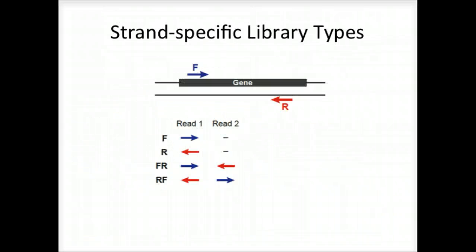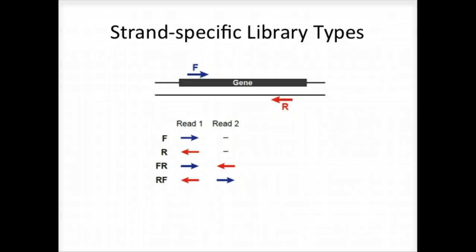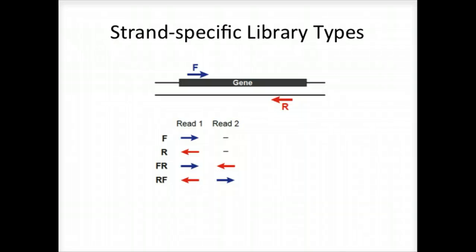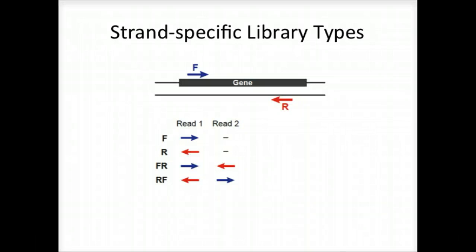Depending on the protocol used for generating strand-specific RNA-seq data, the reads should end up with a specific orientation with respect to the sense strand of your expressed transcript sequence. For example, paired-end sequencing generates two reads for each RNA-seq fragment. Read one could be sequenced in either the sense or anti-sense direction. Trinity needs to know which orientation it corresponds to so that it can reconstruct transcripts according to the sense strand of the transcript.